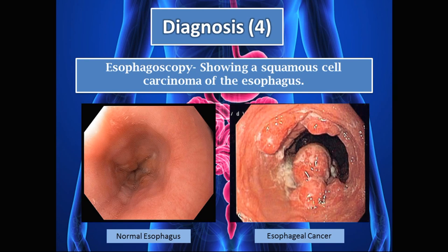Here is a picture from an esophagoscopy showing a squamous cell carcinoma of the esophagus. On the left is a normal esophagus, and on the right you can see a very large malignant tumor where the lumen of the esophagus has been greatly invaded by the tumor.